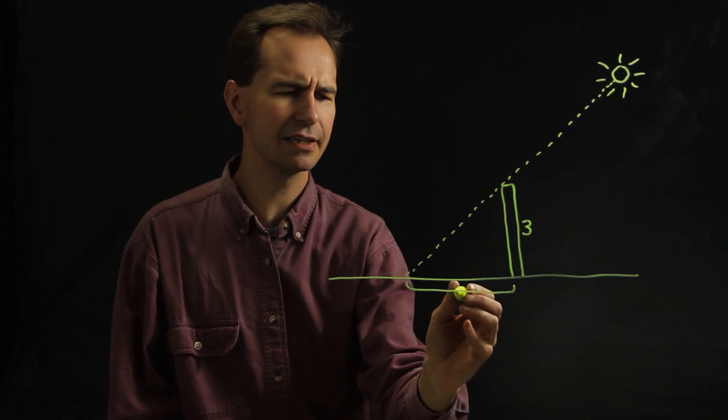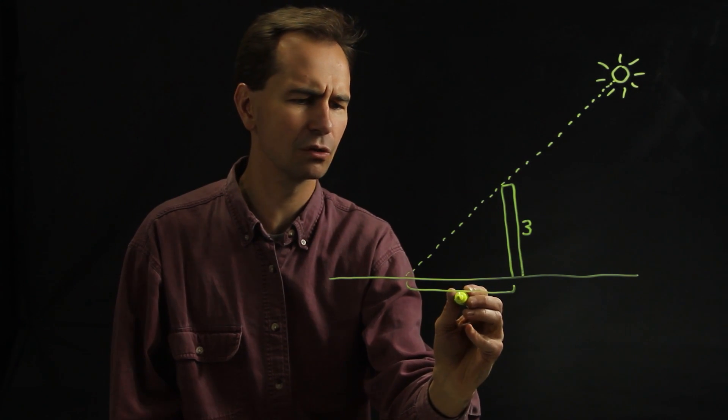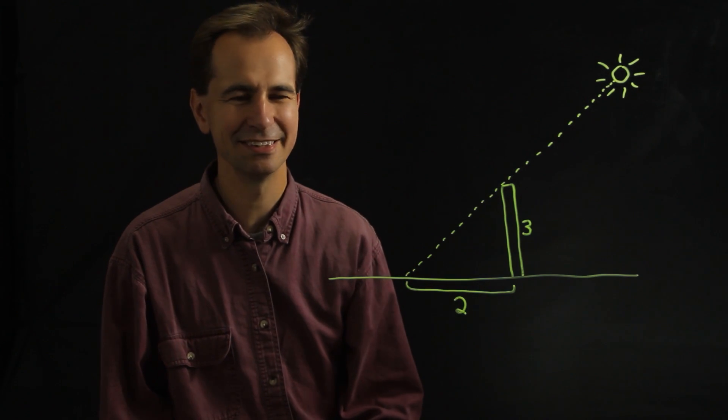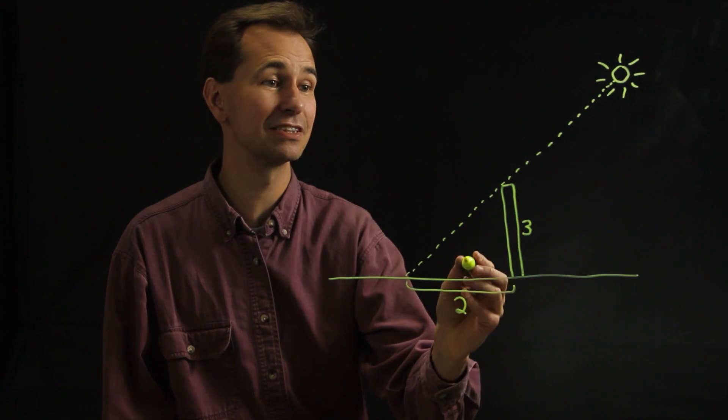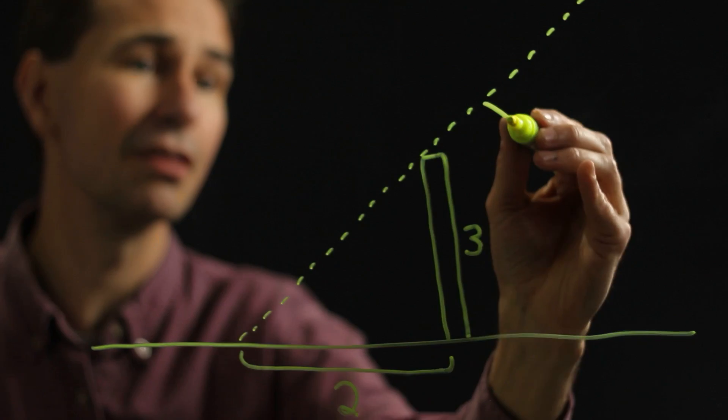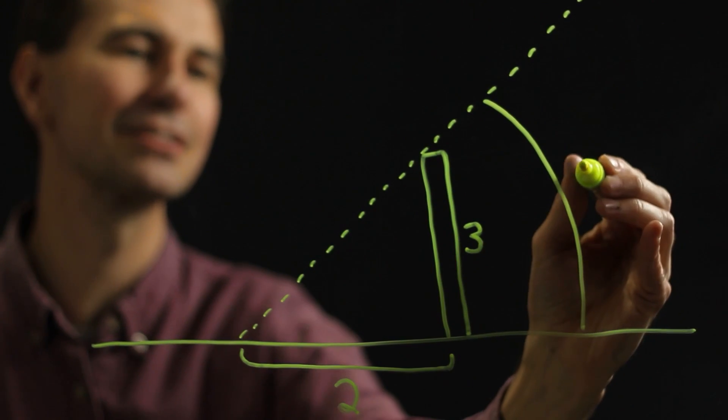So let's say that that shadow was maybe two feet long at a certain time of day. The angle of elevation of the Sun in this case is just this angle right here. Let's call that theta.